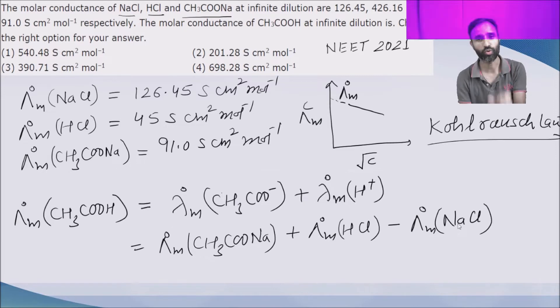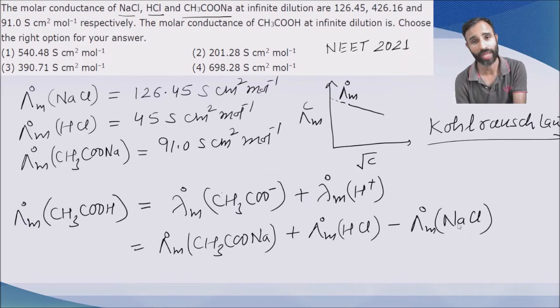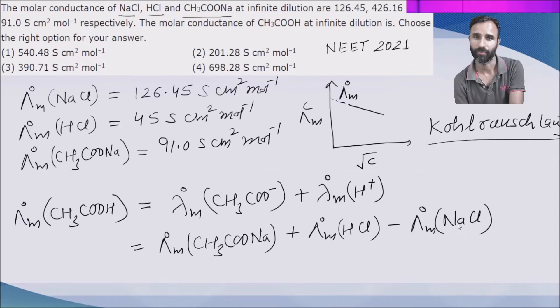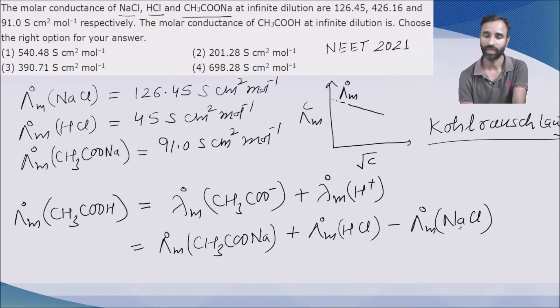We use sodium acetate and HCl to get contribution of acetate and H plus. But at the same time, extra contribution of Na plus and Cl negative comes into picture. So we subtract their contribution by using NaCl. The result is lambda m0 of acetate ion and lambda m0 of H plus ion. In this way we calculate lambda m0 of acetic acid.